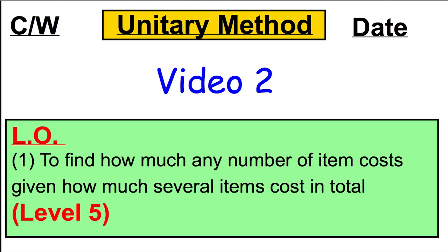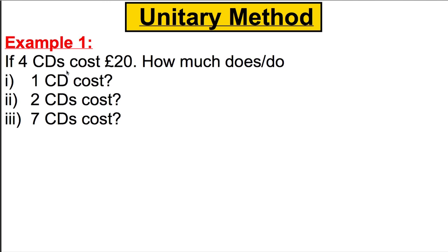Hi there and welcome to another video, Year Nines, on the unitary method. This is video two — please write the title and the day as classwork. In this video we're going to find out how much any number of items cost given how much several items cost in total, moving up to a slightly harder level than the last video. For example, something like: five CDs cost 60 pounds — how much are 11 CDs? I've broken it down for you, so let's go.